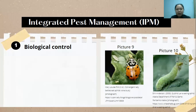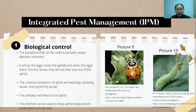The IPM for eggplant: first is biological control. The parasitoid that can be used is Aphelinus, which lays eggs inside the aphids. When the eggs hatch, the aphids die and become mummified. Common predators include ladybugs, lacewing larvae, and hoverfly larvae, which directly feed on the aphids.